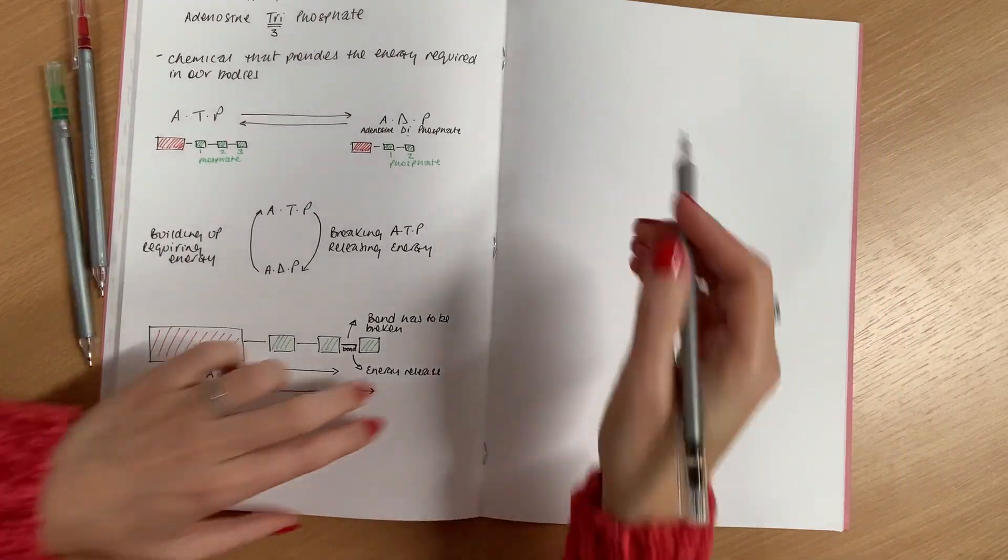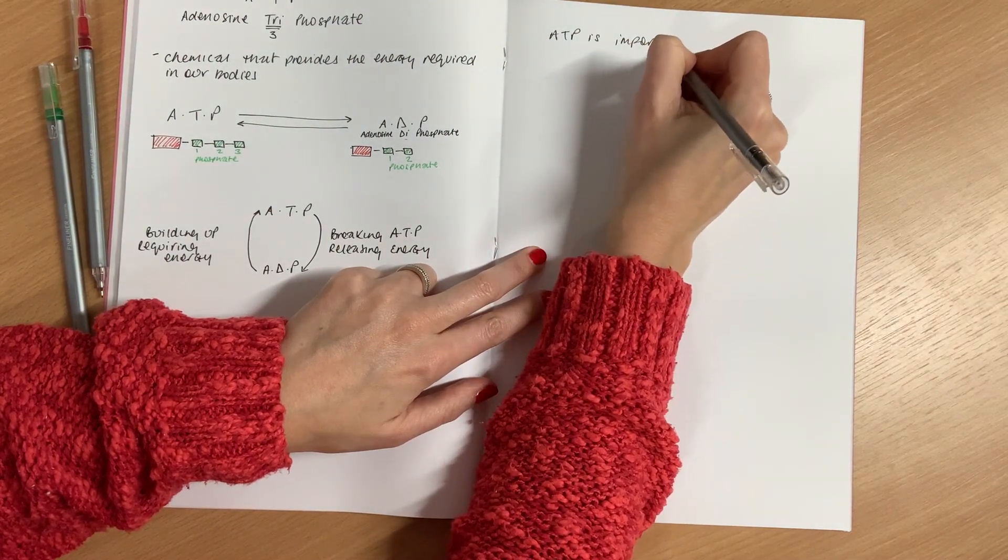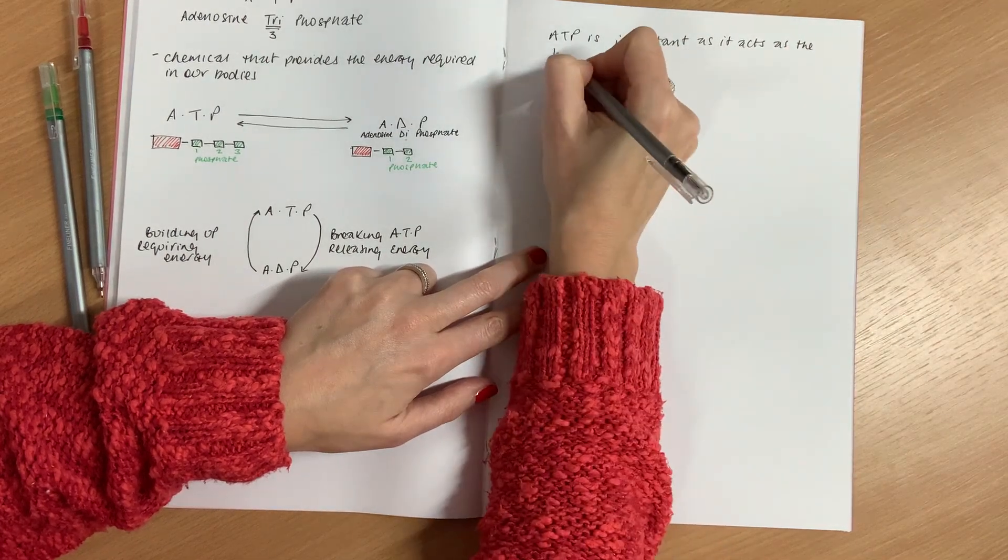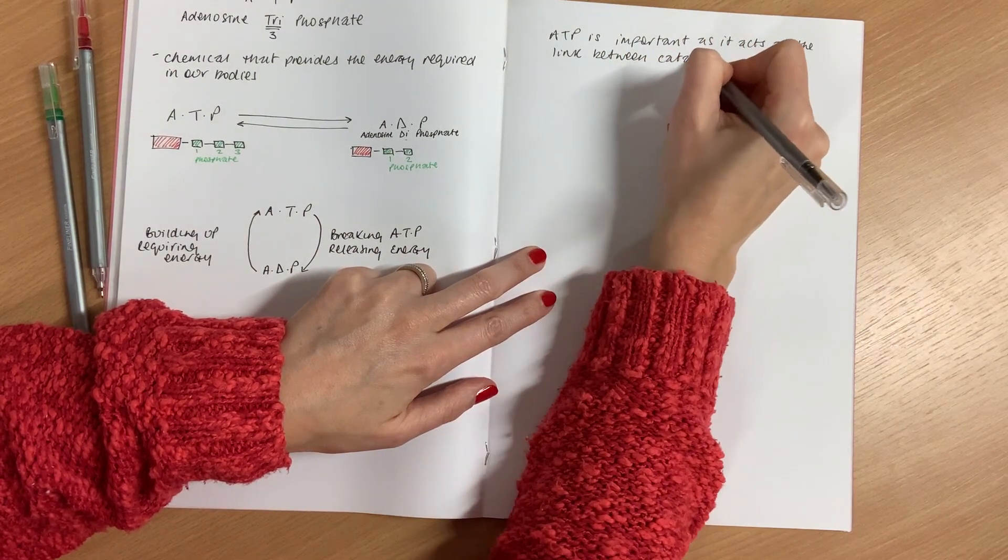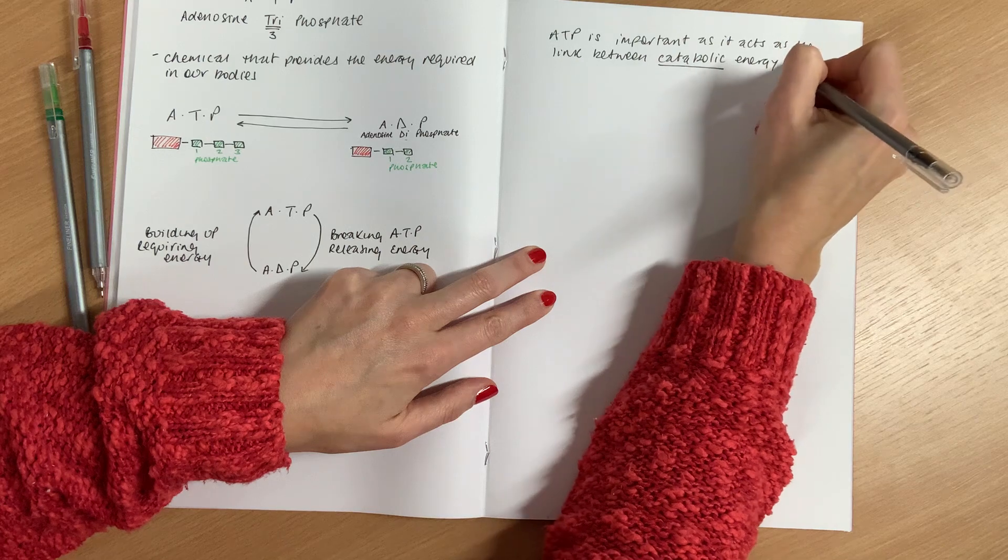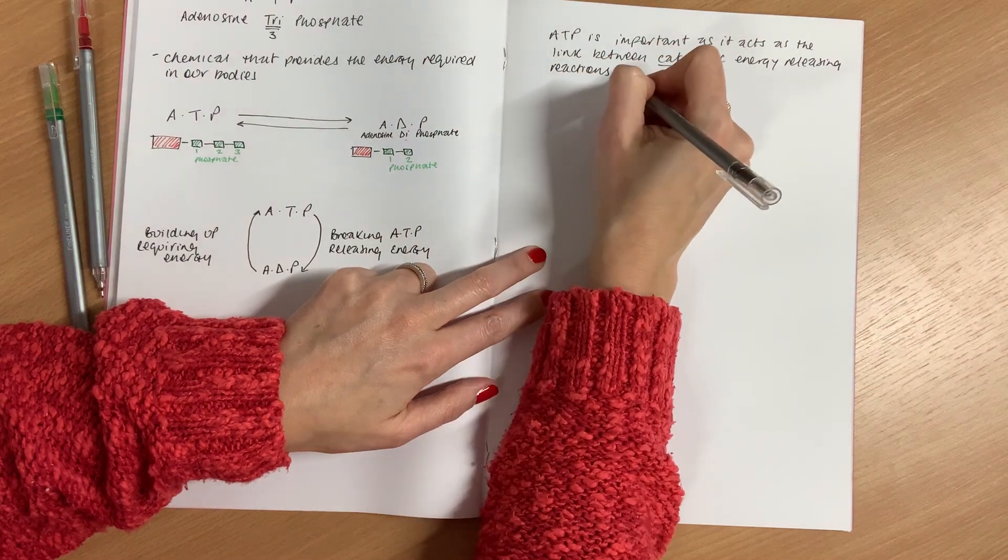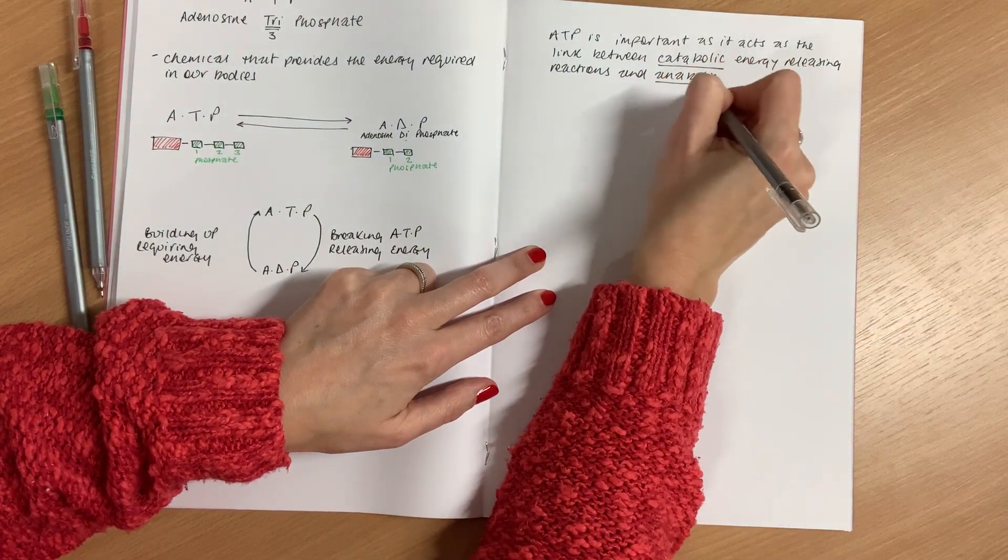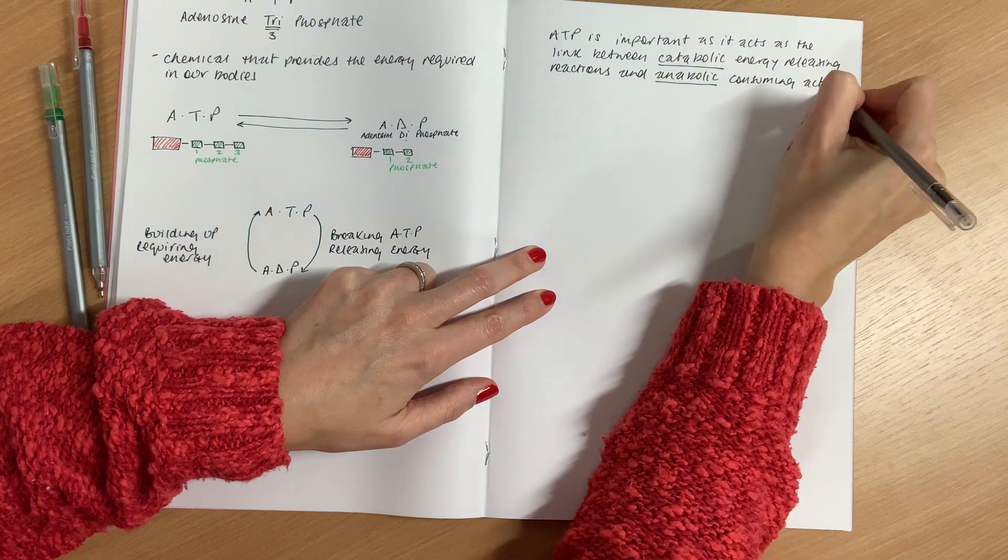So when we talk about ATP, we're going to say that ATP is important as it acts as the link between catabolic, so this is an important word, energy releasing reactions, and anabolic, I'll talk about what these words mean in a minute, energy consuming reactions.